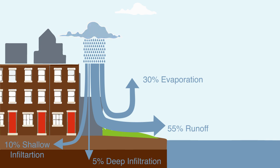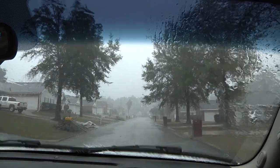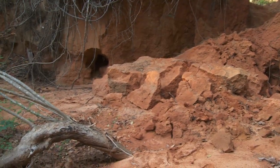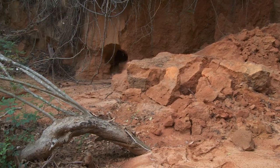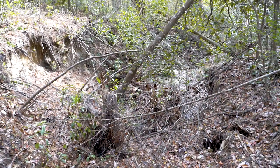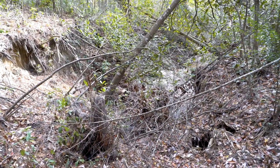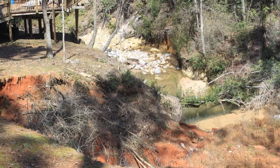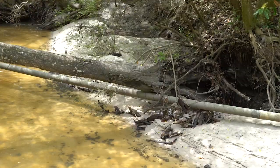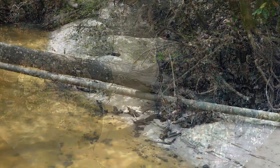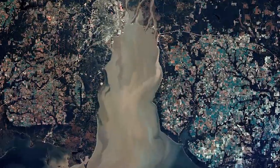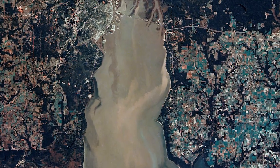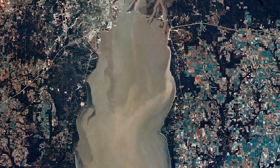This extra water overwhelms wetlands and streams, causing not only increased flooding, but also head cuts and significant stream bank erosion that threatens buildings, roads, and sanitation systems. The suspended sediments can pollute downstream rivers, lakes, and bays.